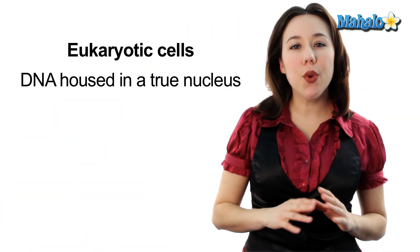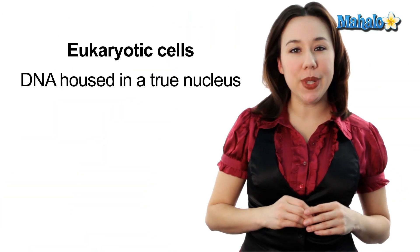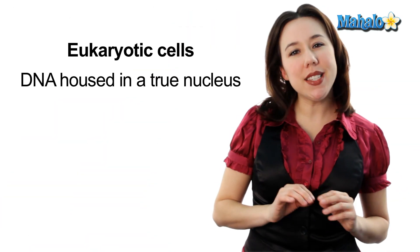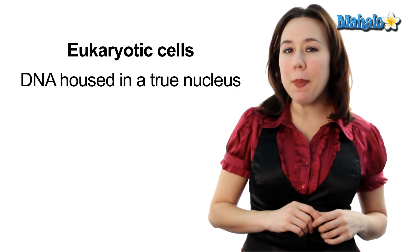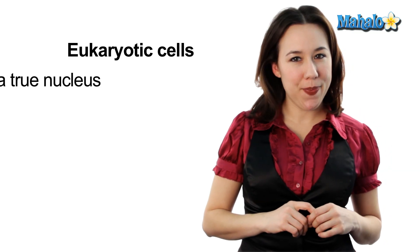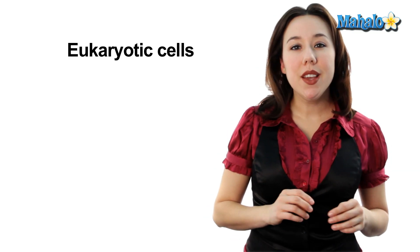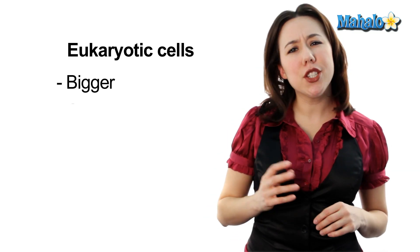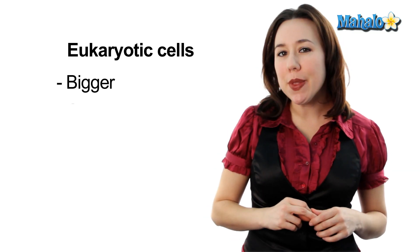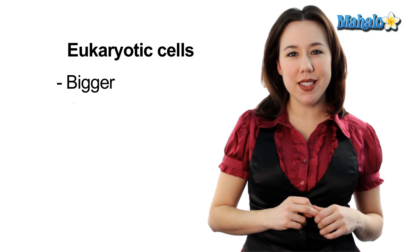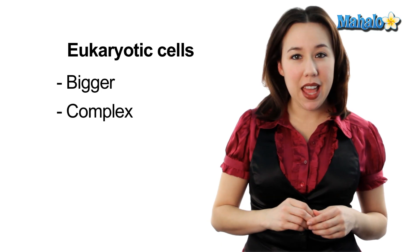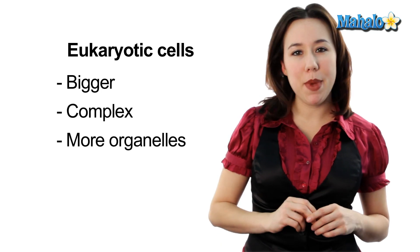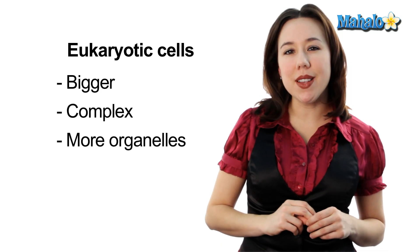Eukaryotic cells are going to have a true nucleus, which means the DNA is going to be housed in a membrane-bound organelle. Also, eukaryotic cells are generally much bigger than prokaryotic cells, and they have much more complexity and a lot more membrane-bound organelles.